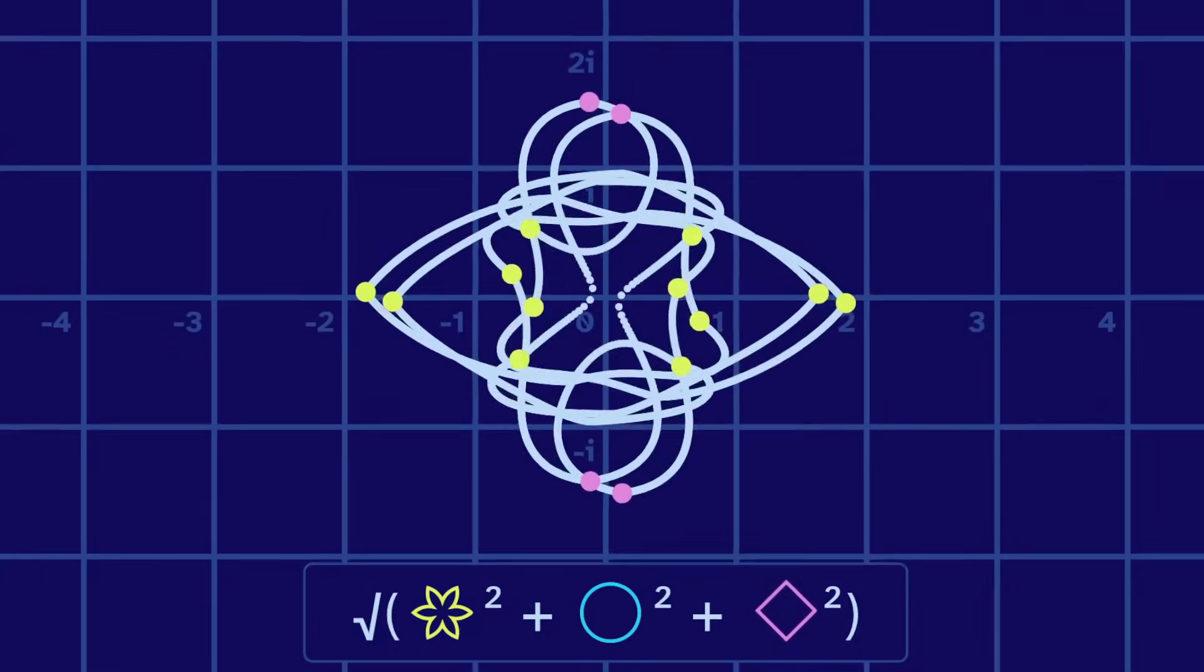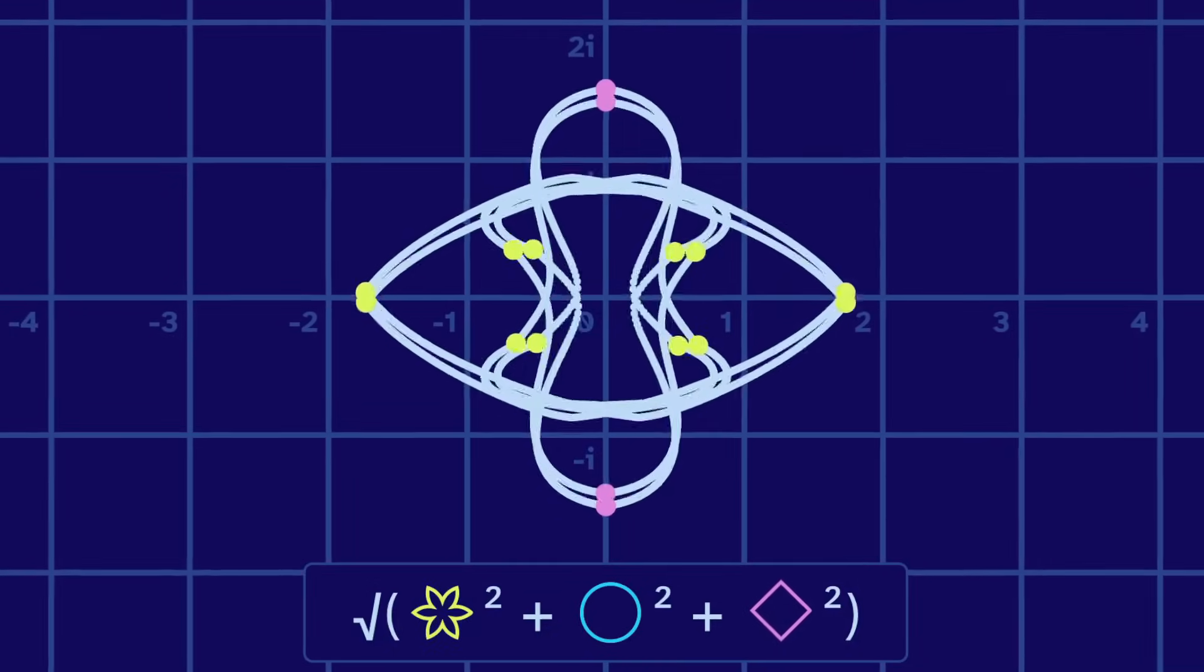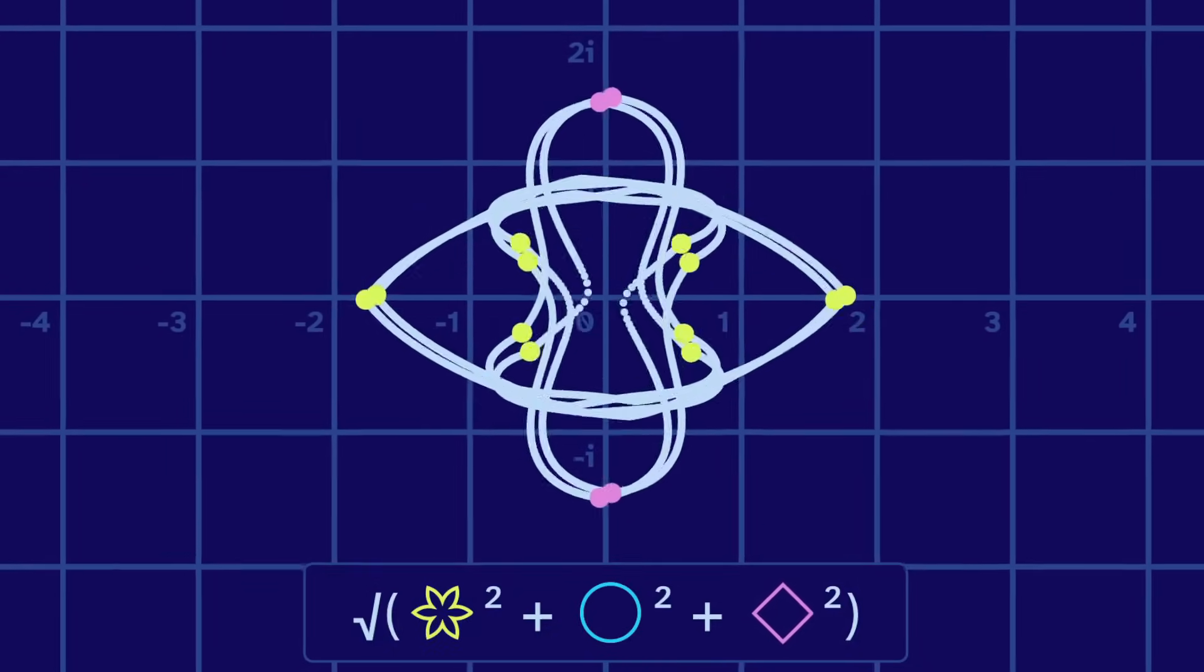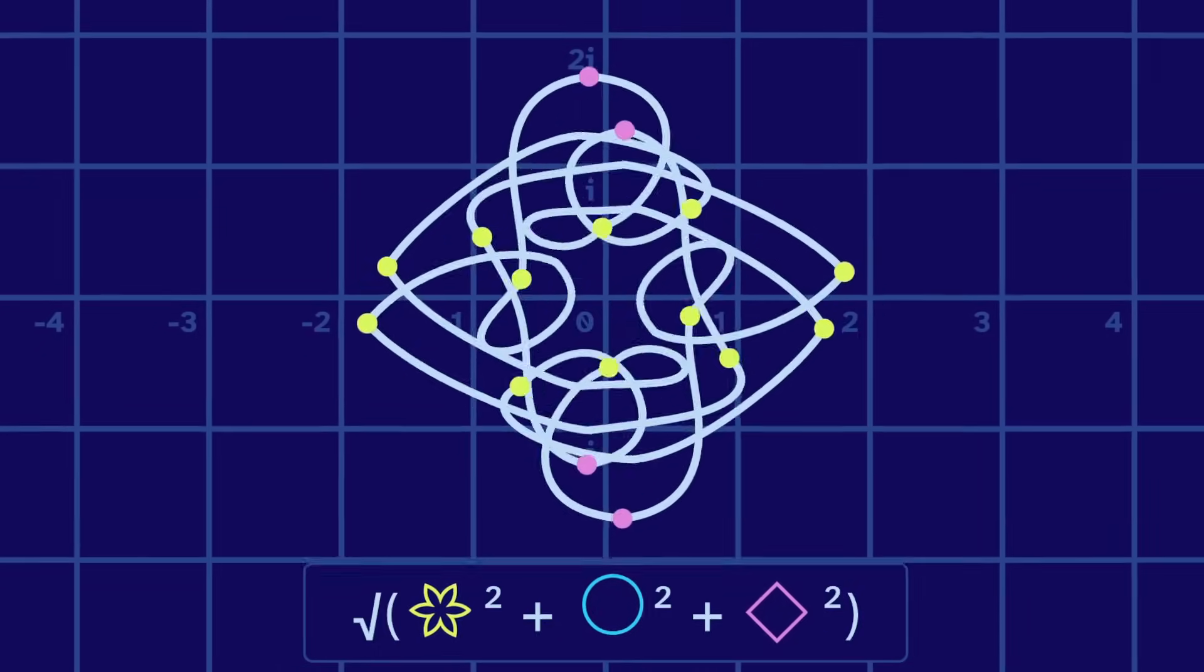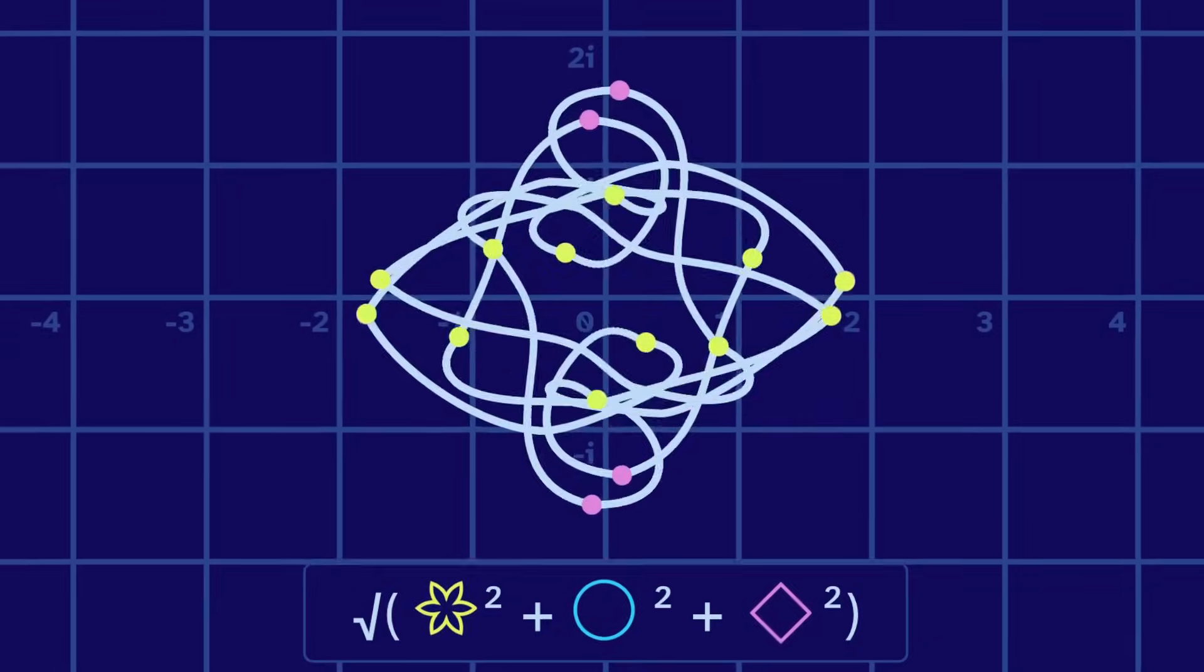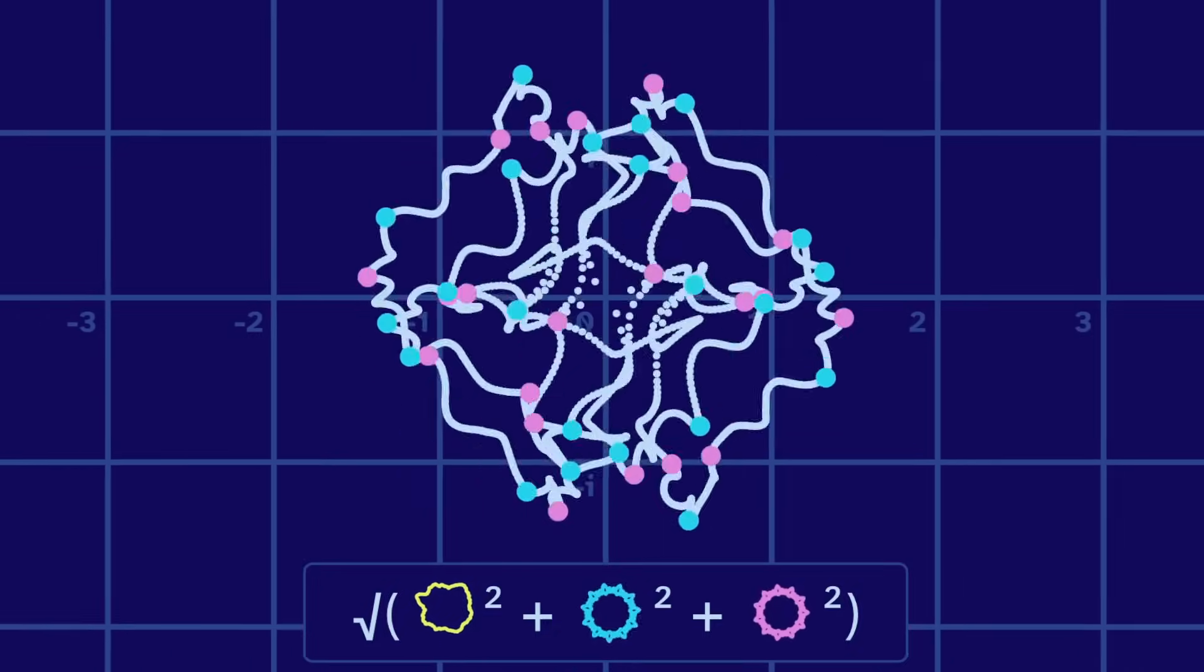Or we can translate. The center of the square input is moving around. Let's move around the others. And of course, the best option is to use all three transformations at once.